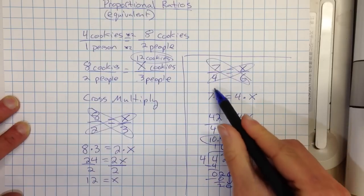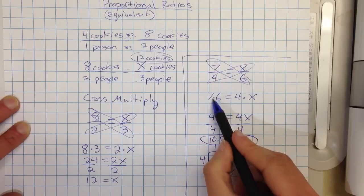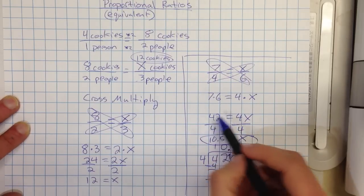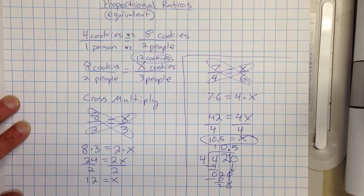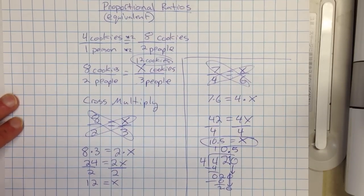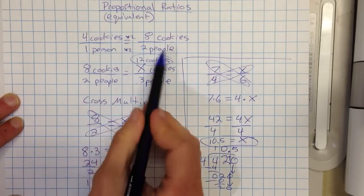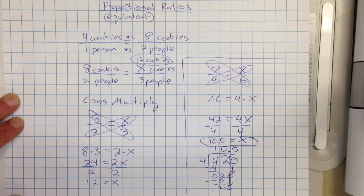I cross-multiply. 7 times 6 equals 4 times X. I evaluated any multiplication I had to do, and then I divided each side by 4. So that's how we can solve proportional equations and find the missing variables. We can just multiply. That's the fast way to do it. Or we can always cross-multiply to solve as well.